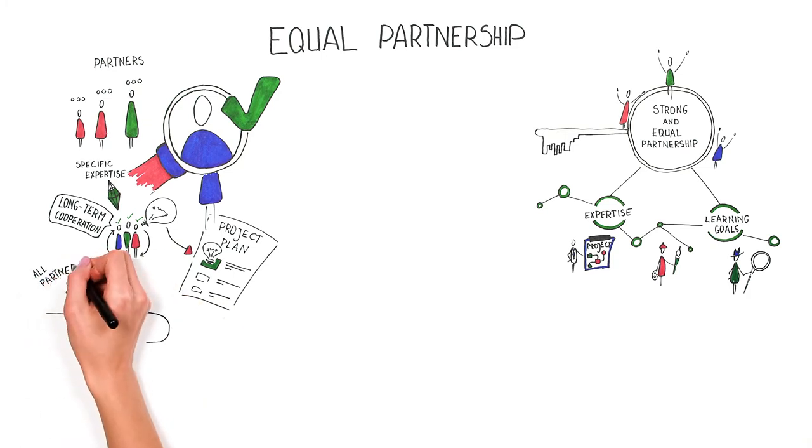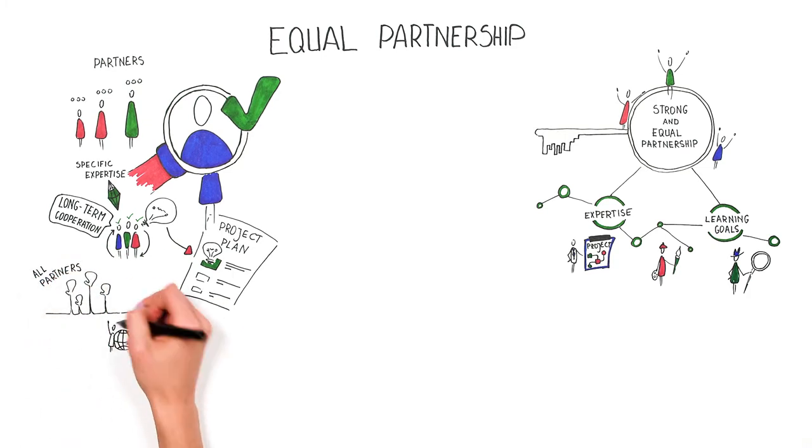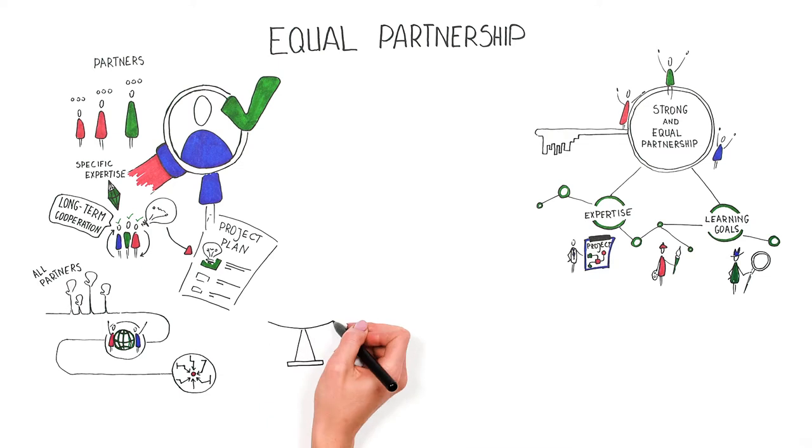Active involvement of all partners means that all partners take part in all activities, transnational meetings and coordination. A balanced division should also be visible in the budget and the program.